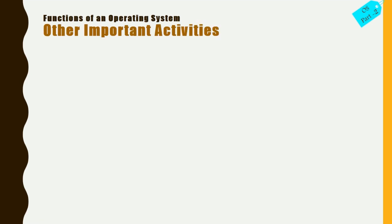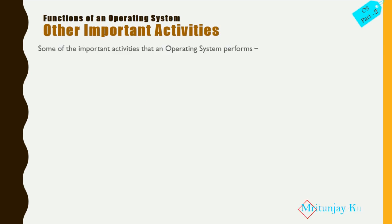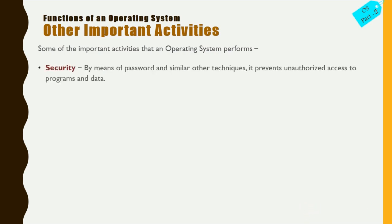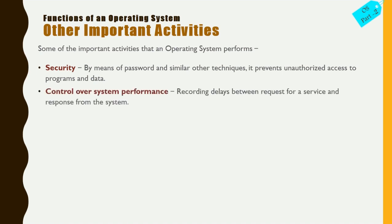There are some other important functions of the operating system. Number one, security: by means of passwords and other techniques such as authorization and authentication, it prevents unauthorized access to programs and data. Number two, system performance: this involves recording the delay between a request for service and the response from the system. For example, how much time it takes to open a file depends on system performance, which the operating system controls.